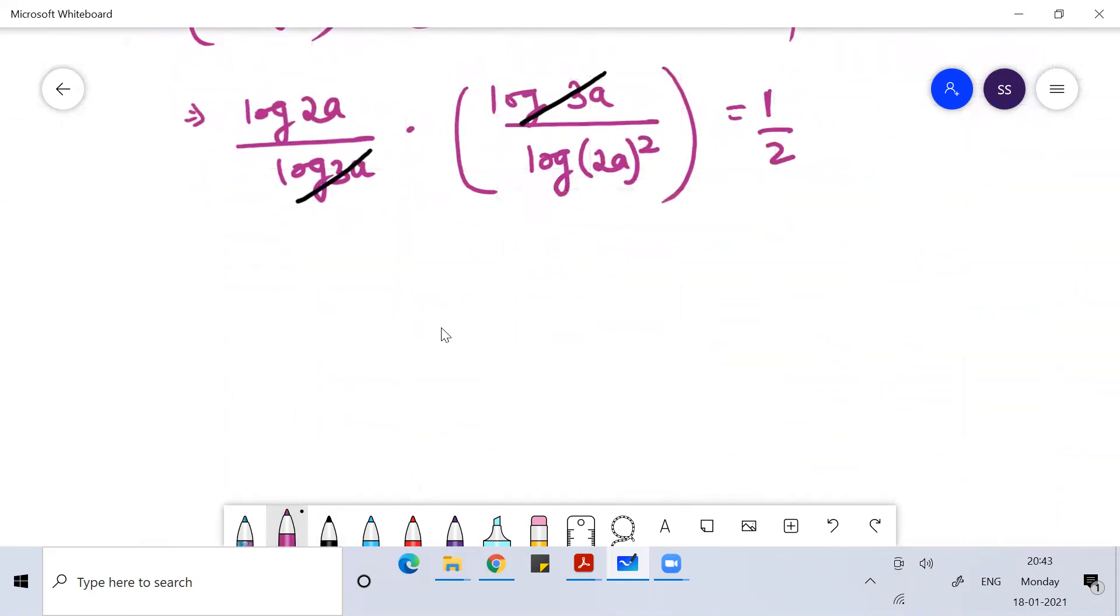Okay, everyone. So I can write this as log 2A divided by 2 log 2A that is equal to 1 by 2.